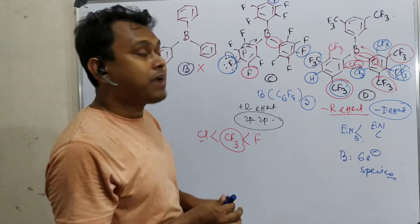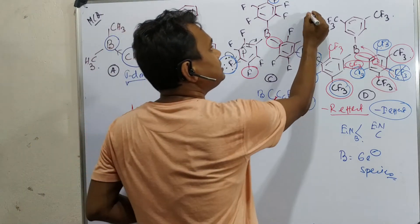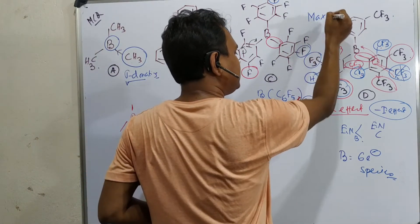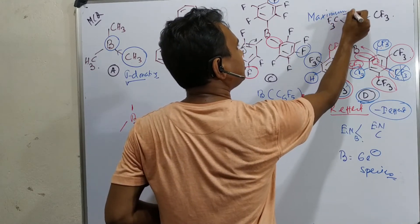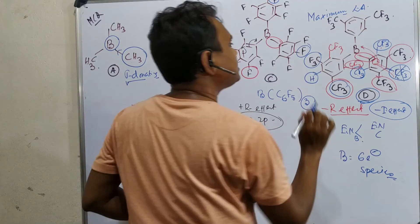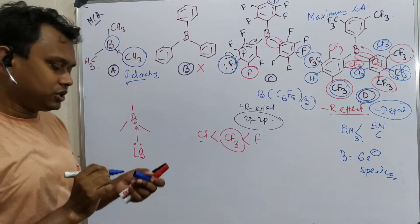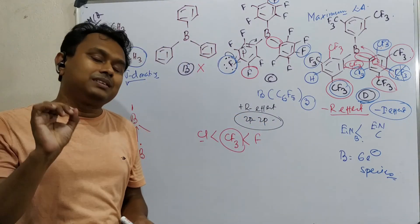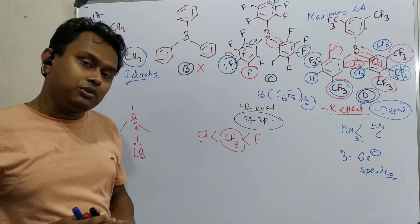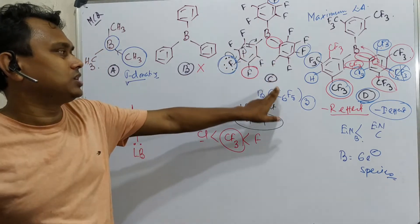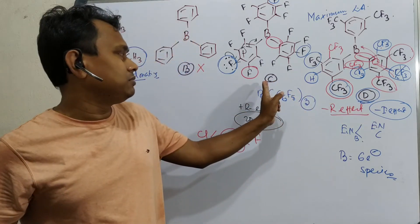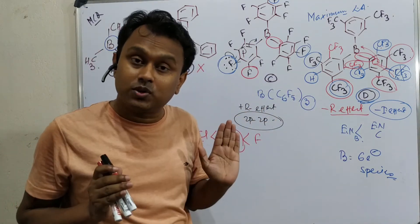So that is the explanation. Which one is maximum Lewis acidic? This option D is maximum Lewis acidic. Now the question: if this is asked in your exam, within 30 seconds how can you answer? First of all, you need to understand that options A and B are not possible because of the substituents. So competition is between C and D. This is called process of elimination. You must be very sharp on this.